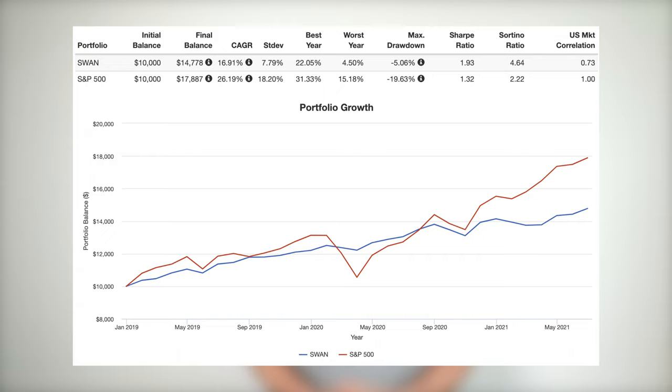Here's a backtest going back to SWAN's inception in December 2018 through June 2021. As we'd expect, SWAN has lagged the market in terms of total return, but has delivered a much higher risk-adjusted return. Notice its volatility is less than half that of the S&P 500, and its max drawdown during this time period was a quarter that of the market.